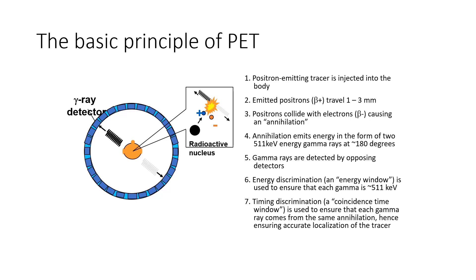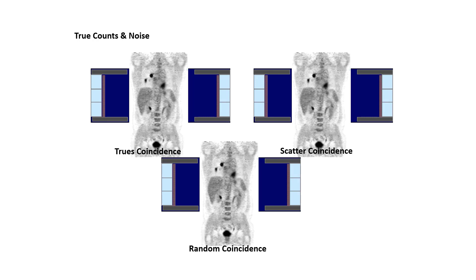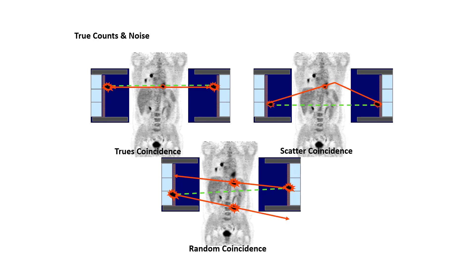Gamma rays are detected by the opposing detectors. When a positron is emitted, the detectors record the energies. We have a true coincidence — coincidence being the two 511 keV energies simultaneously going out at the same time. We have a scatter coincidence, which means the detectors are picking up scatter radiation, but it is not a true coincidence. Notice that on the true coincidence, the detectors pick up the two energies simultaneously, and that way we can utilize that data to create images. We cannot create images with scatter radiation or scatter coincidences, nor can we create images from random coincidences.